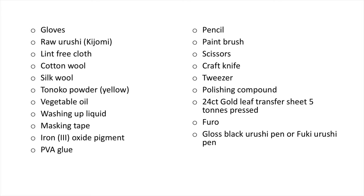For this project, you will need a pair of gloves, raw urushi, lint-free cloth, cotton wool, silk wool, yellow tonoko powder, vegetable oil, washing up liquid, masking tape, ferric oxide pigment, and PVA glue.